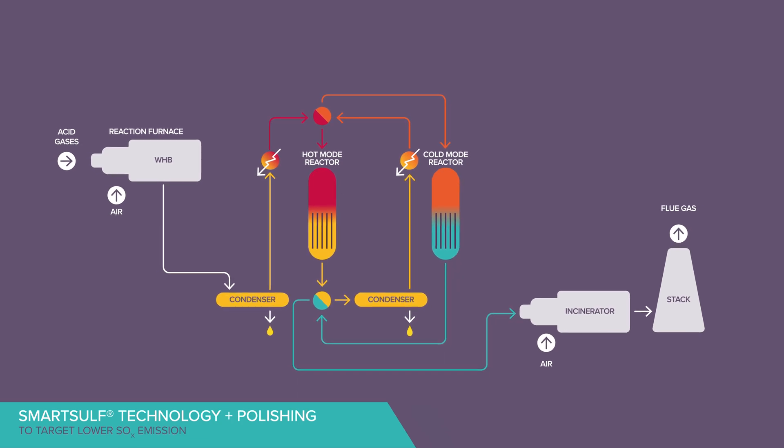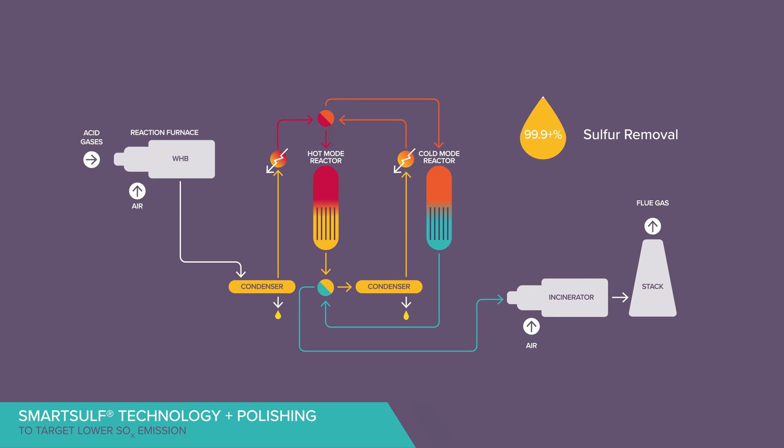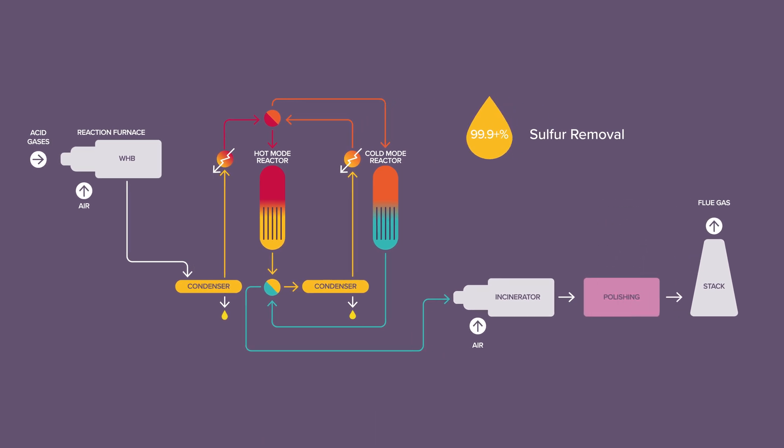SmartSulf can be adapted to reach 99.9% plus sulfur removal by adding a polishing section with caustic wash downstream of the incinerator. This upgrade can achieve World Bank specifications for SO2 emission.